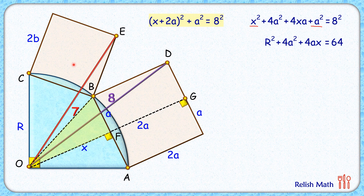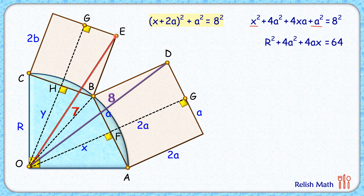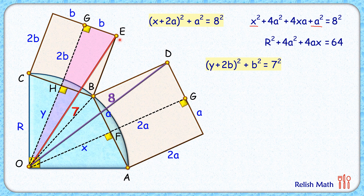Now we'll obtain a second equation from the second square using the same steps. From point O we drop a perpendicular on BC, which is also the perpendicular bisector. Let's assume OH has length y centimeters. When extended, this is also the perpendicular bisector of the other side, with HG equal to 2b. Looking at triangle OGE and applying the Pythagorean theorem: (y + 2b)² + b² = 7².